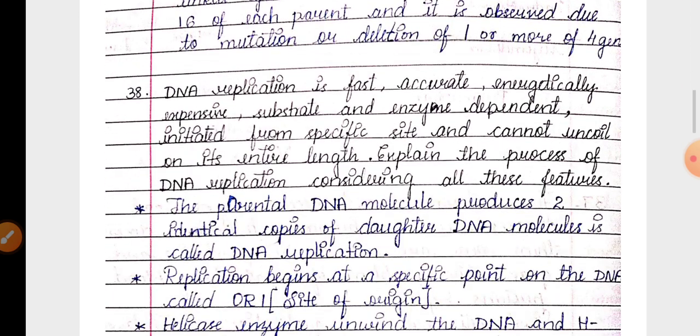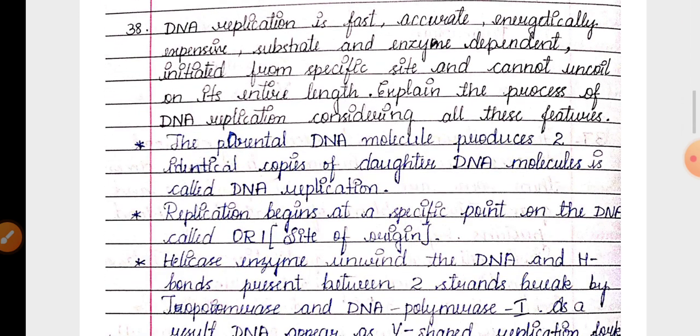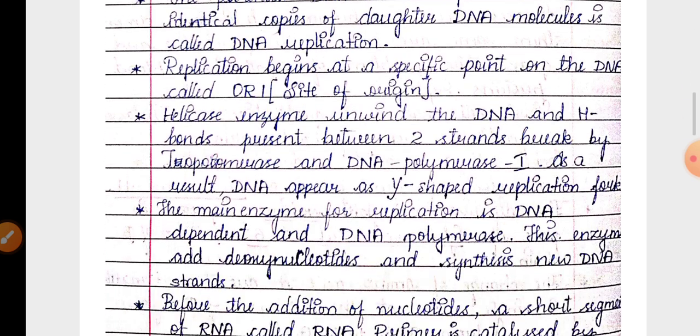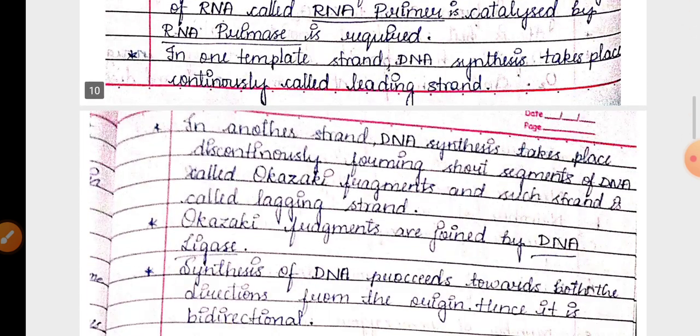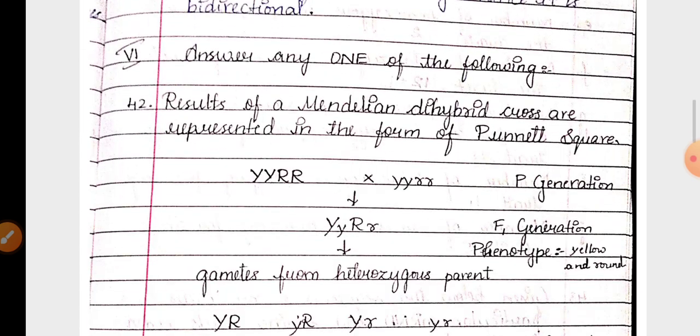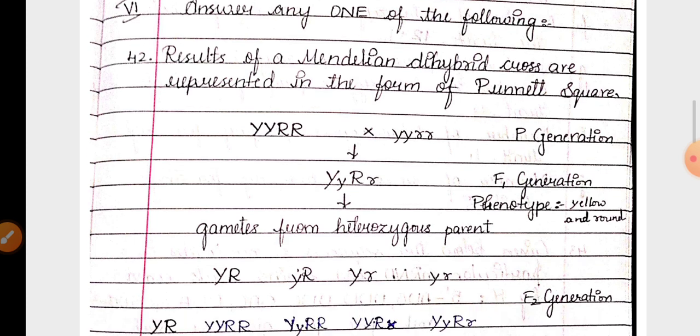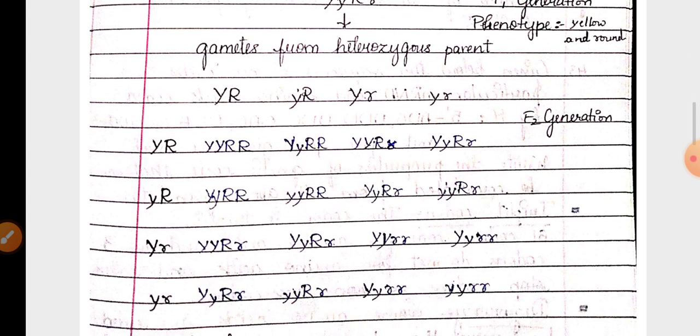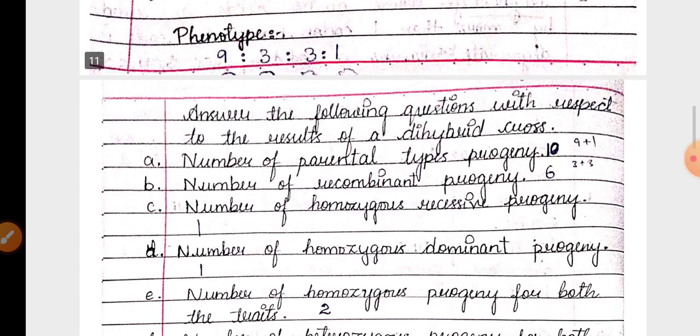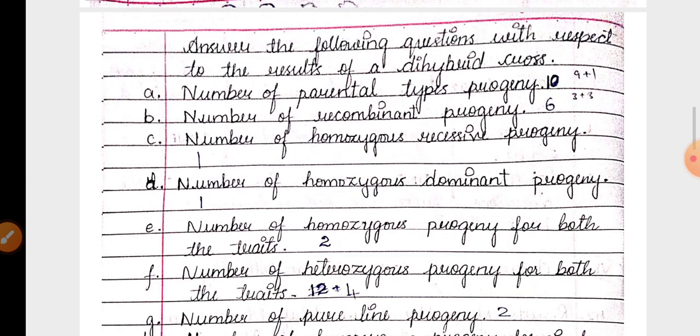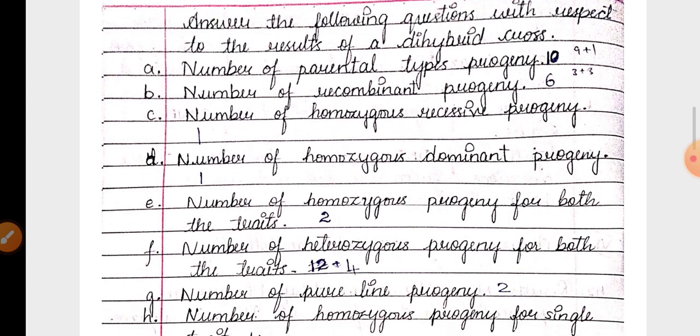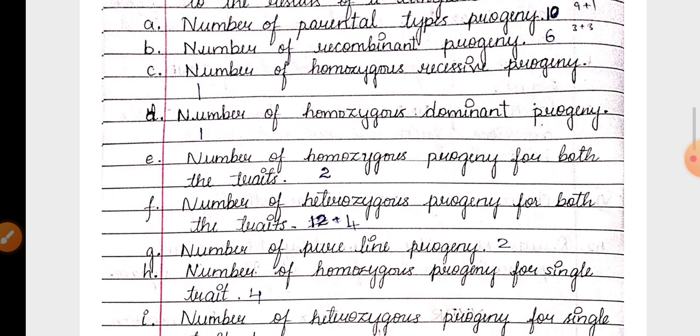That explanation has been given. 38th question related to DNA replication. Then 42 question, dihybrid cross Punnett square given in the question and related to the phenotype and genotype ratio. There are some questions here which have been answered.